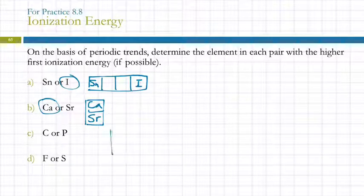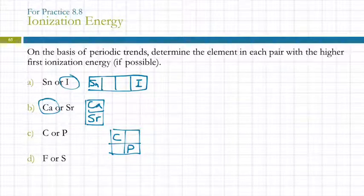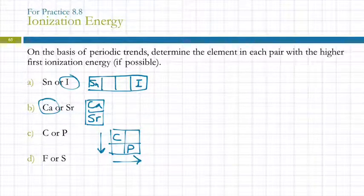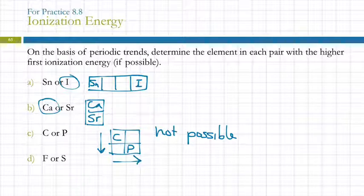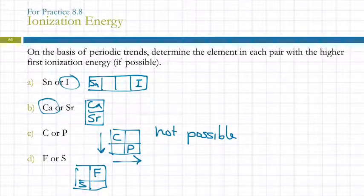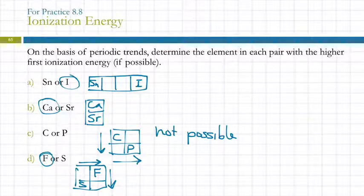Carbon or phosphorus? Carbon is up and to the left; phosphorus is down and to the right. The two trends conflict, so we cannot reliably predict which has the higher ionization energy. Fluorine or sulfur? Both the across trend and the down trend point to fluorine: fluorine is to the right and above sulfur, so fluorine has the higher ionization energy.